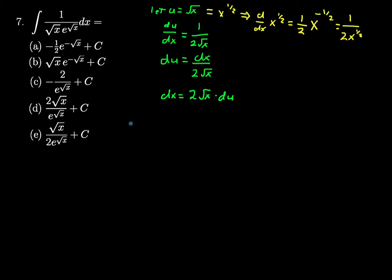So, we're going to take that and say that integral is going to be equal to the indefinite integral of 1 divided by the square root of x times e to the u. I replaced this square root with u, and that's what we defined it as, multiplied by 2 root x du.